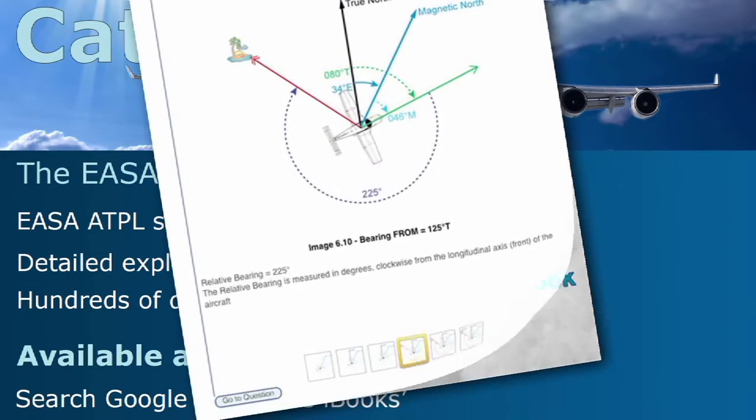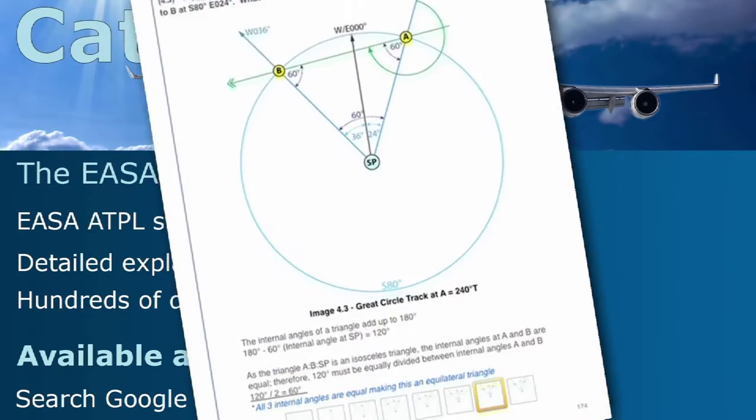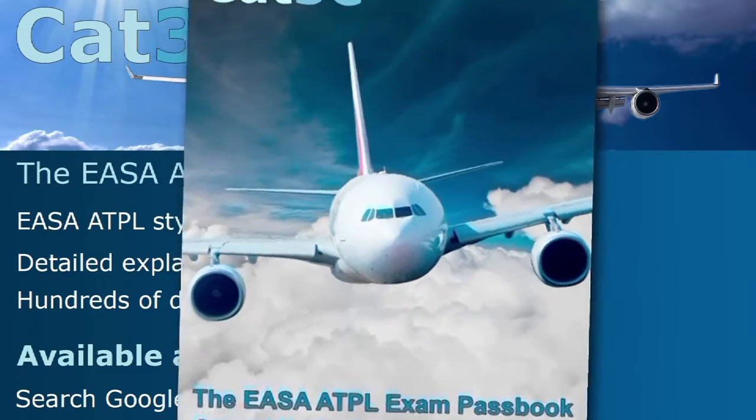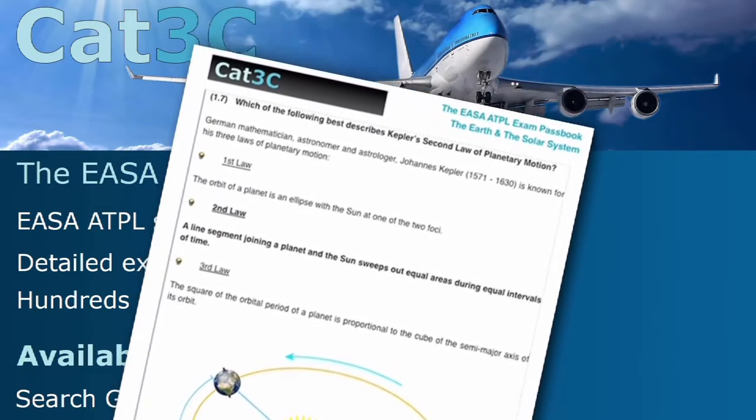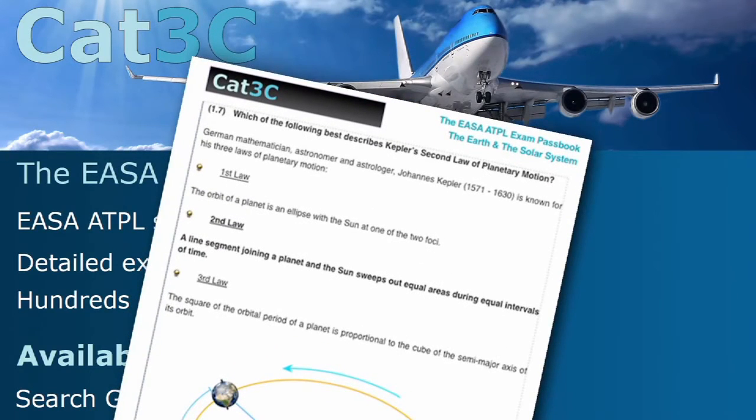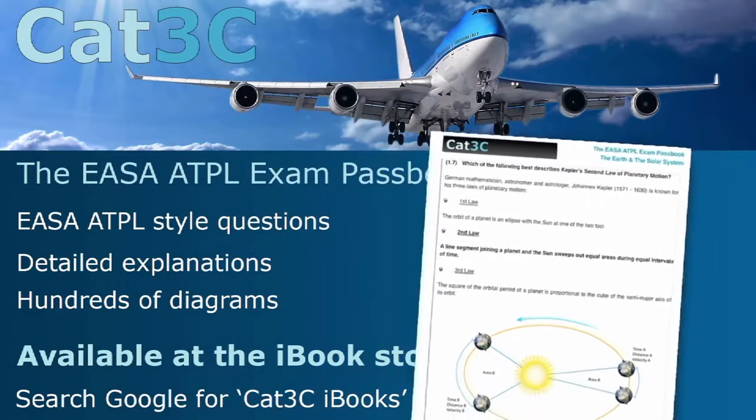The passbooks contain hundreds of exam-style questions and are supported by clear, in-depth explanations and interactive diagrams. The link to the iBooks can be found on the webpage below or at the Cat3C website at the Bookstore tab.